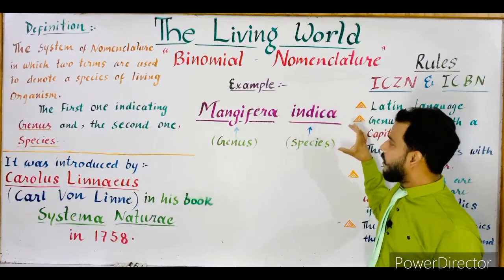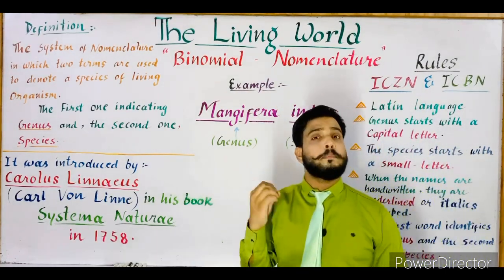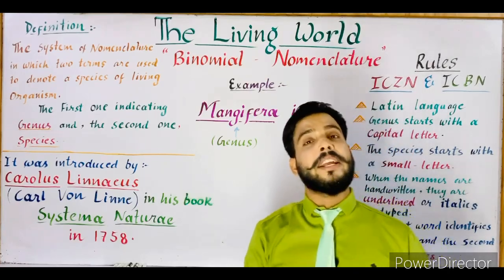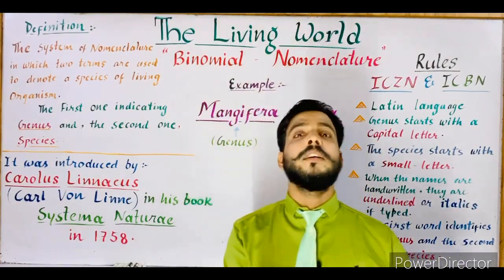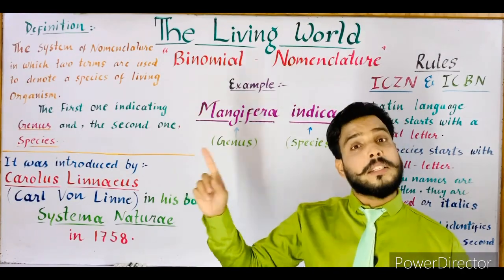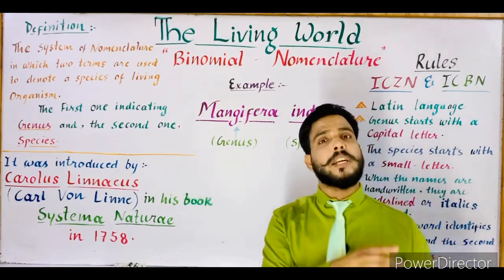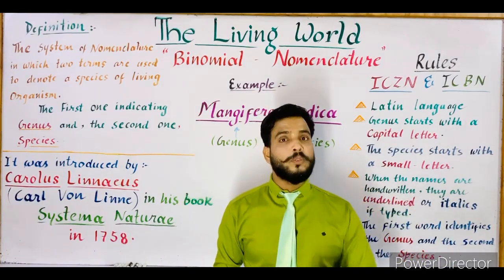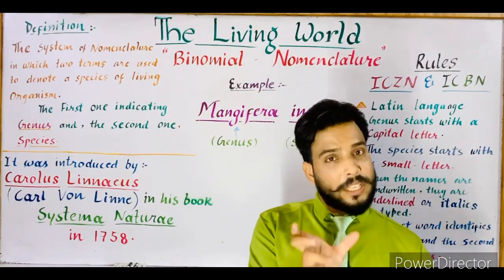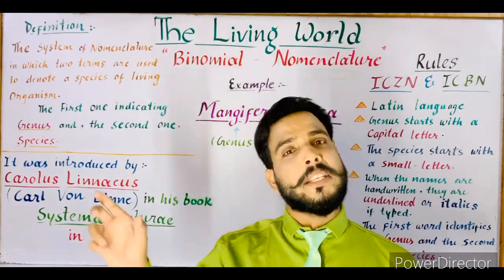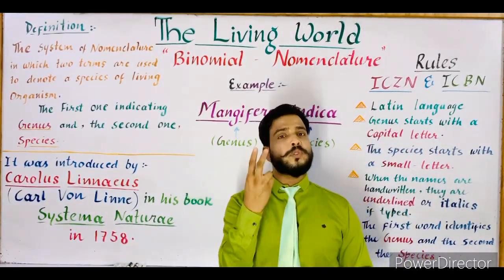For example, Panthera tigris is the scientific name of tiger, in which Panthera is the genus while tigris is the species. Similarly, Pisum sativum is the botanical name of pea, in which Pisum is the genus while sativum is the species. So all scientific names consist of two names — the first denotes the genus and the second denotes the species.